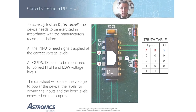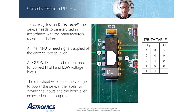To correctly test an IC in circuit, the device needs to be exercised in accordance with the manufacturer's recommendations. We need to test all the inputs with signals applied at the correct voltage levels, and we need to monitor the outputs to make sure that the highs and lows meet the manufacturer's recommendations.